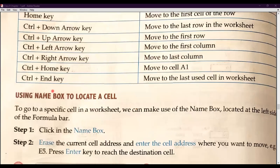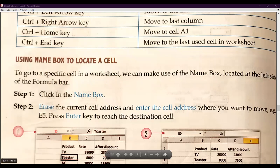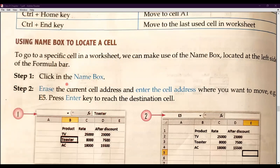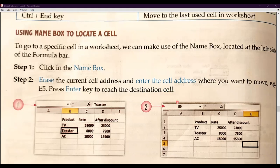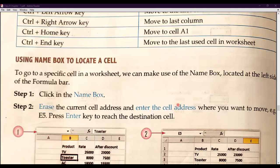The last topic of today's session is using the Name Box to locate a cell. To go to a specific cell in a worksheet, we can make use of the Name Box located at the left side of the formula bar. To access it, click in the Name Box, erase the current cell address, and enter the cell address where you want to move — for example, E5. Press Enter to reach the destination and you will be taken to that cell.